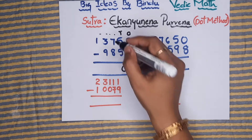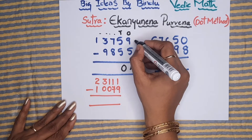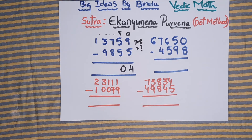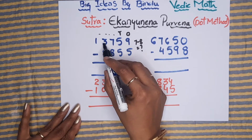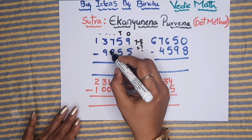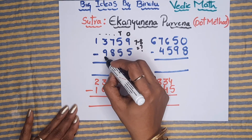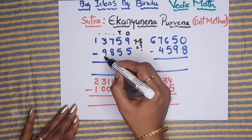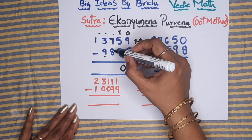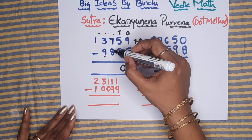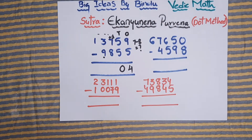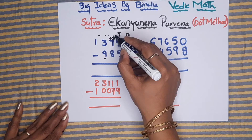Now, 7 minus 8 — this is not possible. So wherever direct subtraction is not possible, we keep a dot on the left-side digit. Here the subtrahend digit is 8, and the friend of 8 is 2. That 2 must be added to the minuend digit: 7 plus 2 equals 9.